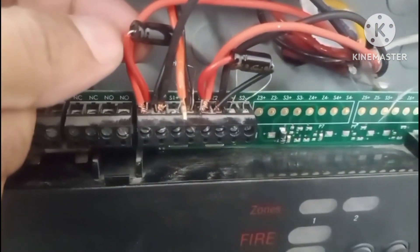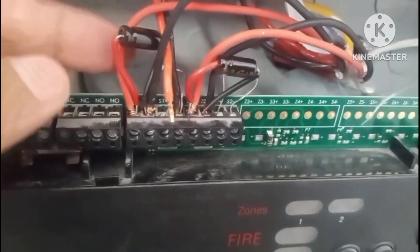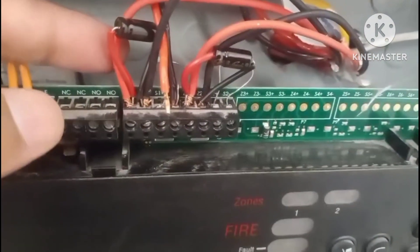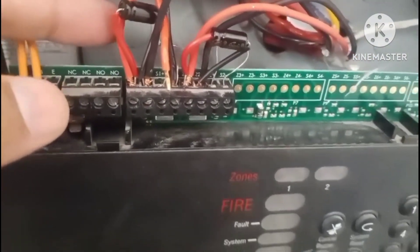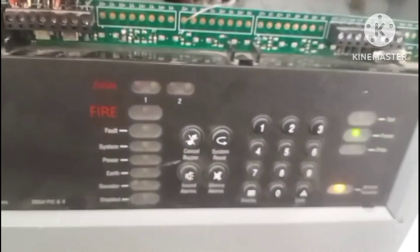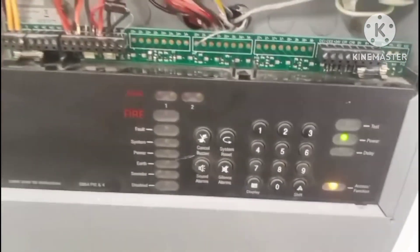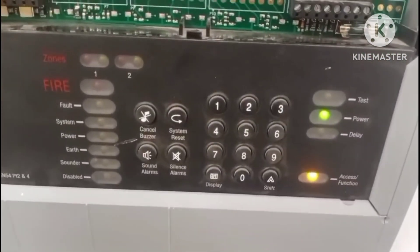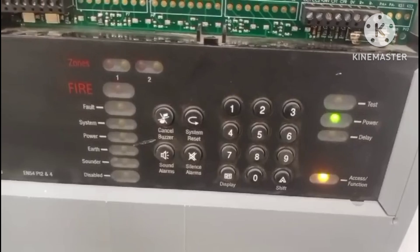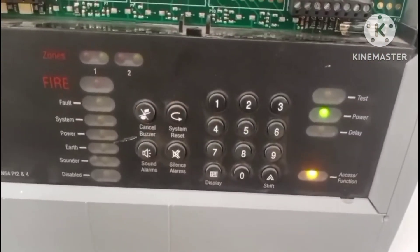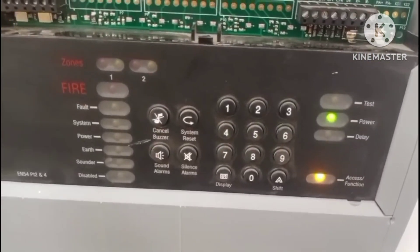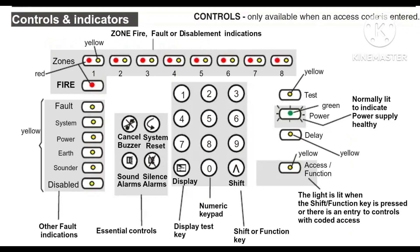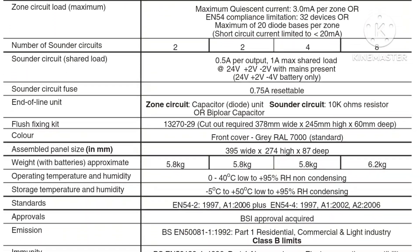This is the zone circuit arrangement: Zone 1 (S1) and Zone 2 (S2). Zone 1 is for MCPs and sounders — many bells and call points — then next is Zone 2 and S2. These are the control indications as you can see on this panel.